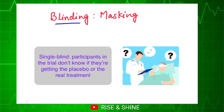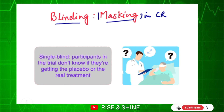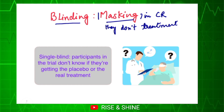Today's topic is blinding and masking in clinical trials. It is one of the very important processes in clinical trials where the participants or the researchers conducting the research are masked. What do we mean by masked? It means that they don't know the treatment — they don't know which treatment is going to which patient, whether it is a placebo or a new treatment.